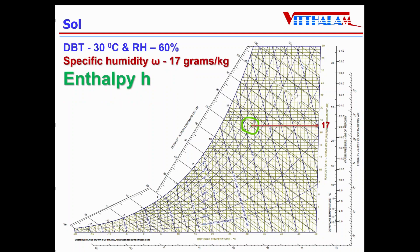Second property is the enthalpy. As we know, enthalpy is an inclined line. So from this point, if I draw an inclined line when it intersects the enthalpy line, the value of that, that is 75, is the enthalpy of the given air, that is 75 kilojoule per kg of dry air.